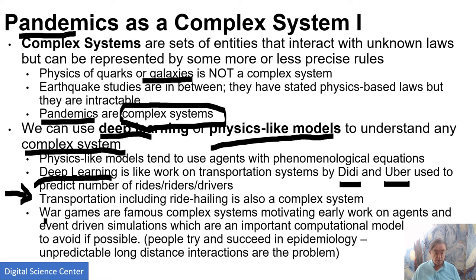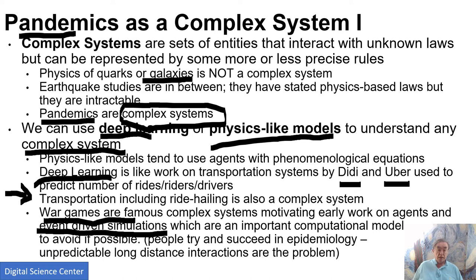In the past, the best known example were war games. The Department of Defense had a famous effort studying war games, and it generated a lot of early technology, including what's called event-driven simulations. Event-driven simulations are very important because the model for agents interacting is often an event model. Here you have a cell sitting doing nothing — when a virus hits it, that's an event, and there have to be rules to know what to do.